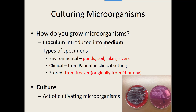Types of specimens we can grow microorganisms from include environmental specimens — things growing in ponds, soils, lakes, and rivers. Clinical specimens are samples that come directly from a patient, helpful for diagnosis. And stored specimens come from a freezer — originally from a patient or environmental source, but when working with bacteria in lab, we pull them from a freezer.